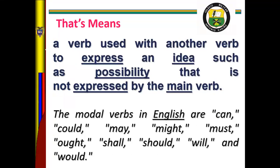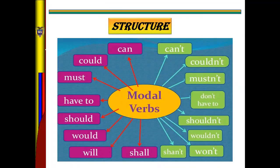The modal verbs in English are: can, could, may, might, must, shall, should, will, and would. The structure in modal verbs includes: can, could, must, have to, shall, should, will, and would. Remember this structure in the affirmative form.